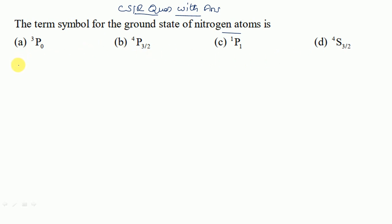So first what is the electronic configuration of nitrogen atom? 1s², 2s², 2p³, because the nitrogen atomic number is 7. Outermost electron, how many electrons are there? 3 electrons.